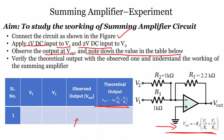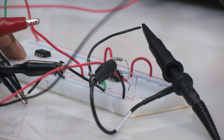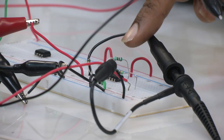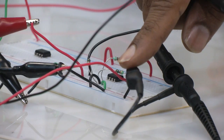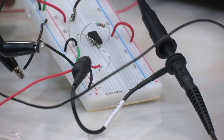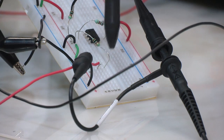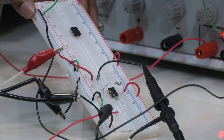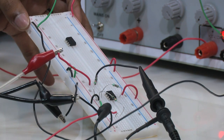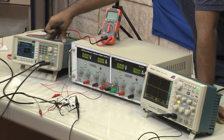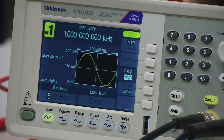Let us see how we can perform the summing amplifier operation. Here on the breadboard on the table, this is the summing amplifier already connected. There are 3 resistors: 2 are input resistors and 1 is a feedback resistor, and we are applying signals to the individual inputs. The first signal from the function generator is about 0.5 volts — that is the first signal to the summing amplifier.